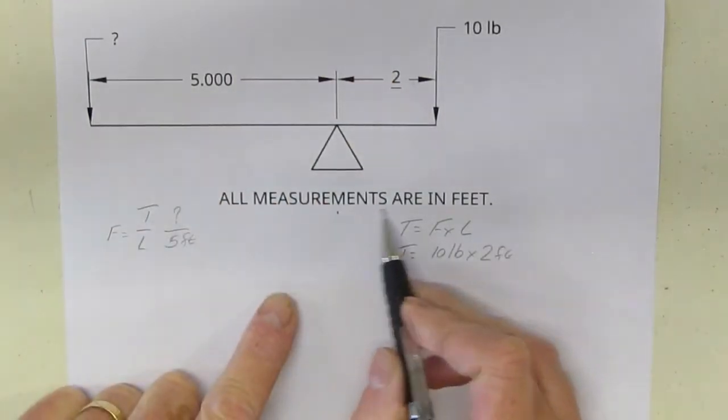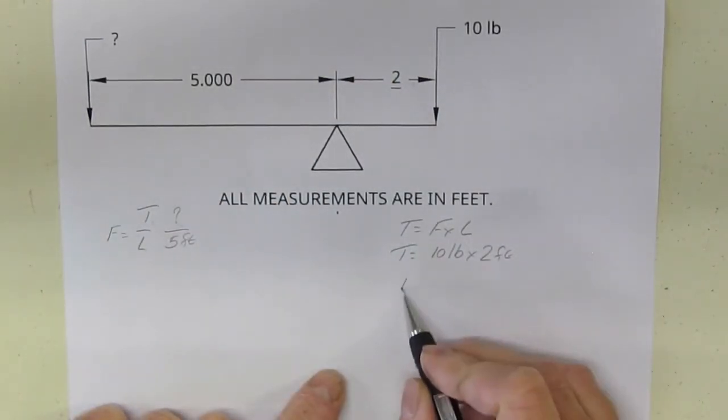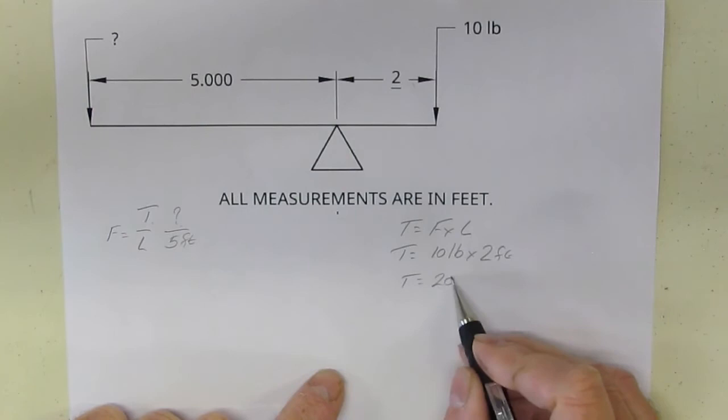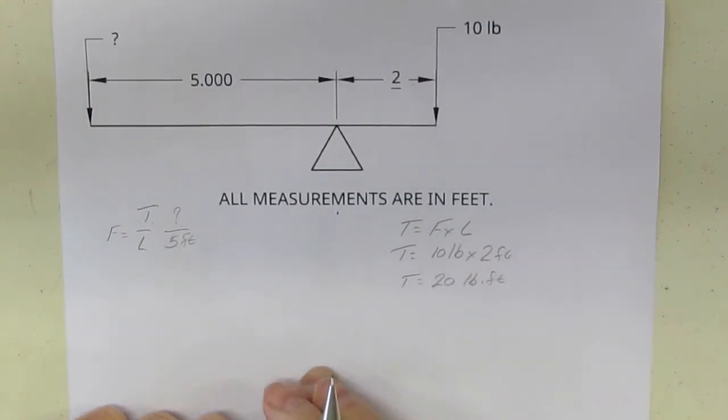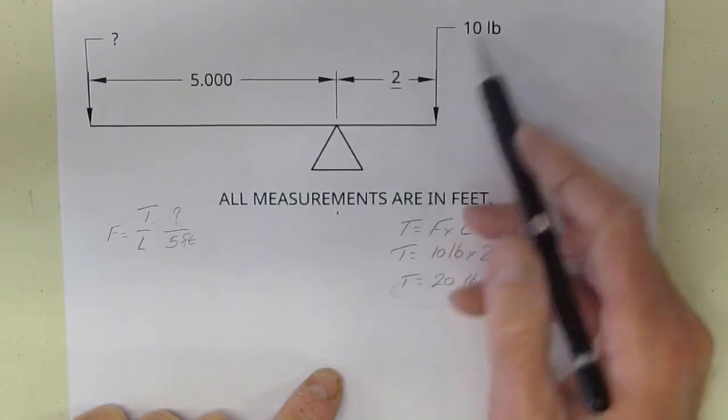So torque in this case is going to be a force of 10 pounds times 2 feet—and remember that's 2 feet because all of our measurements are in feet. So torque now is going to be equal to 20 pound-feet. And all I did was use my six steps: what am I looking for? Torque. What's the formula? Force times length. Plug my numbers in, check my units, chugged away, and 20 makes sense—two times ten is twenty.